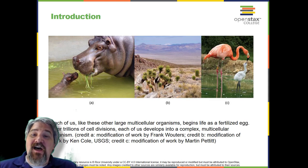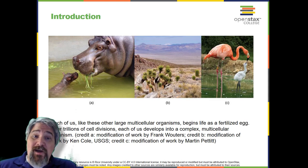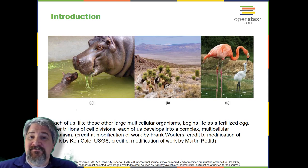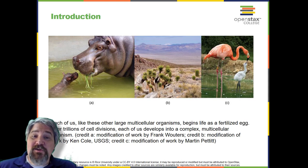In kind does not generally mean exactly the same. While many single-celled organisms and a few multicellular organisms can produce genetically identical clones of themselves through mitotic cell division, many single-celled organisms and most multicellular organisms reproduce regularly using another method. Sexual reproduction is the production by parents of haploid cells and the fusion of a haploid cell from each parent to form a single, unique diploid cell. In multicellular organisms, the new diploid cell will then undergo mitotic cell divisions to develop into an adult organism.